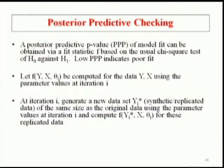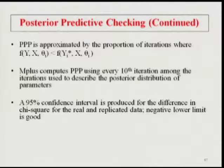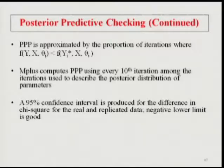We do that for every iteration after the burn-in, and then approximate the posterior predictive p-value by the proportion of iterations where the observed real data test value is less than the replicated data test value. We want the real data test value to be small relative to the generated data test values.